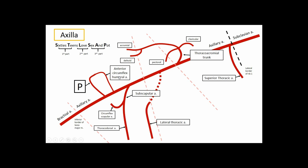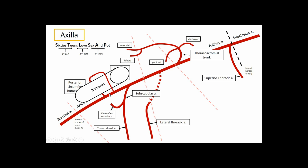The final branches in the third part are A for anterior circumflex humeral artery and P for posterior circumflex humeral artery. These arteries encircle the humerus, providing blood supply to the bone. Although they branch off close to one another, they traverse the humerus differently. An easy way to tell them apart is that the posterior circumflex humeral artery is typically a little larger than the anterior circumflex humeral artery.